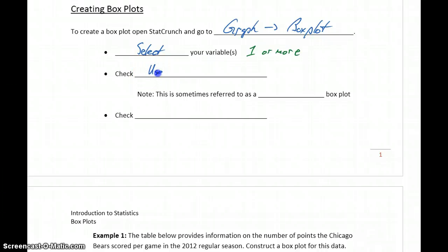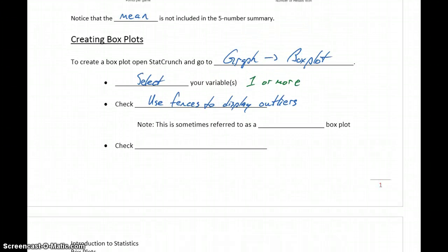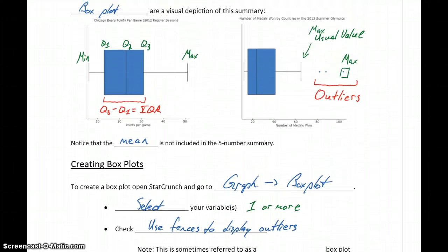You'll want to check the box that says use fences to display outliers. If we go back up to the graphs we looked at just a second ago, both of these graphs were created with that option checked. So outliers are only displayed if they exist, but here we have that break where the fence stops at the maximum usual value and then we have those additional dots.